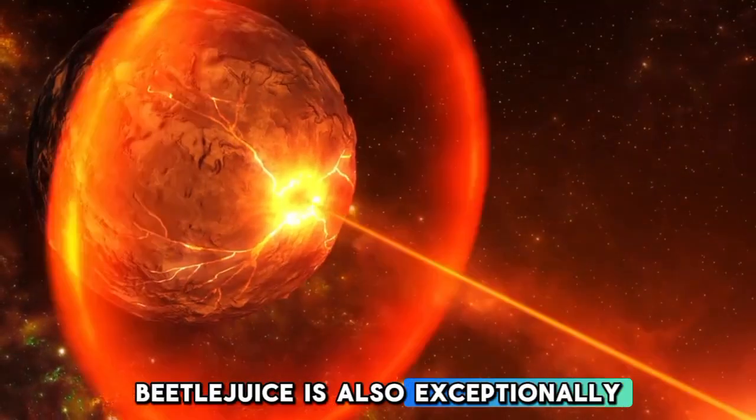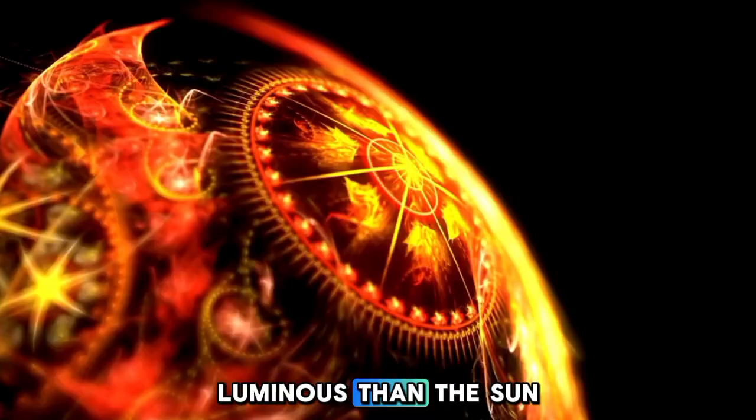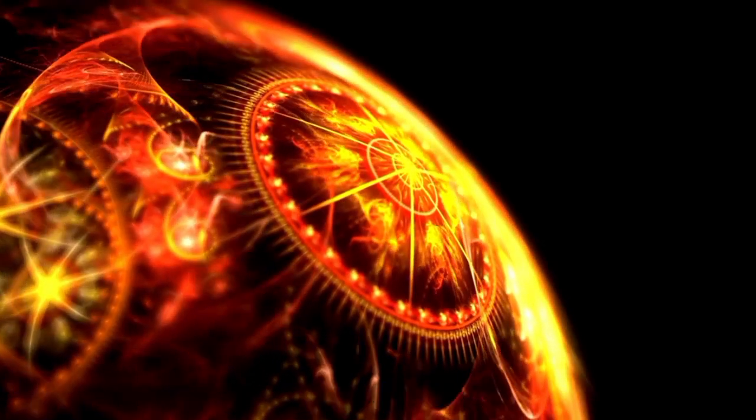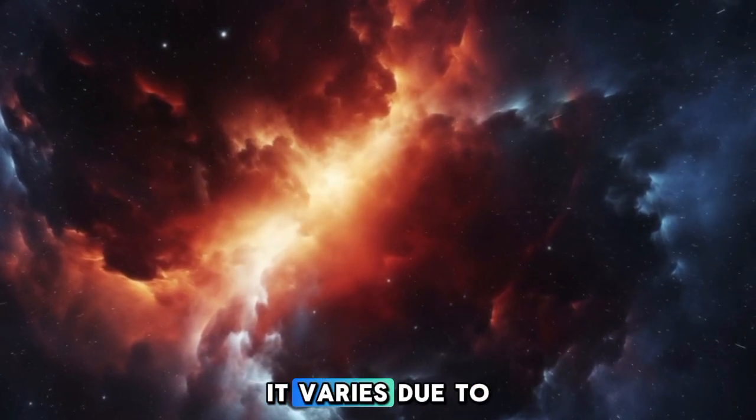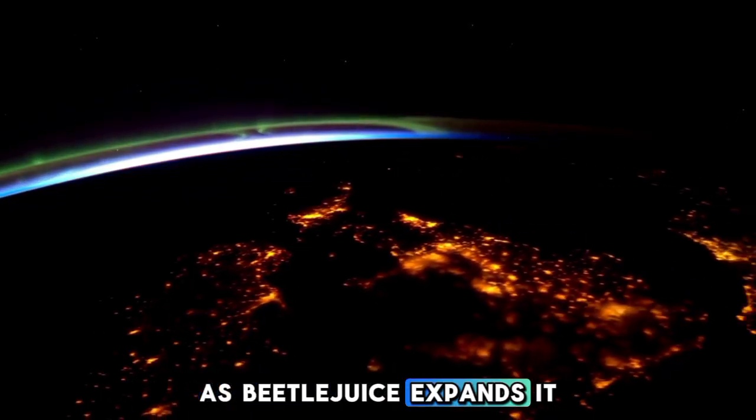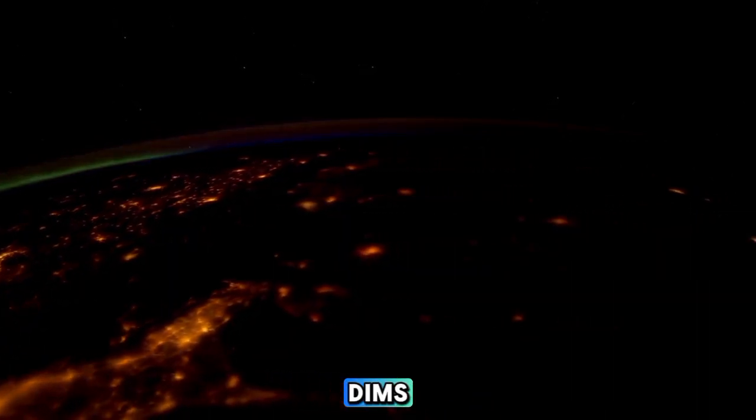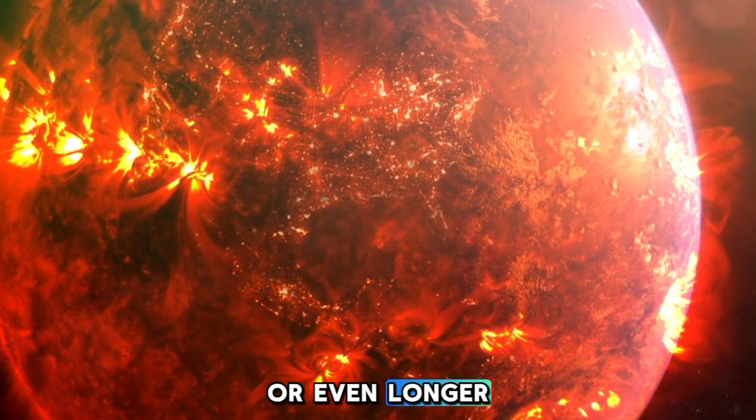Betelgeuse is also exceptionally bright, emitting light thousands of times more luminous than the Sun. It was aptly nicknamed a red giant. However, its brightness does not remain constant. It varies due to its pulsations. As Betelgeuse expands, it becomes brighter. As it contracts, it dims. This cycle can last anywhere from 10 to 100 days or even longer.